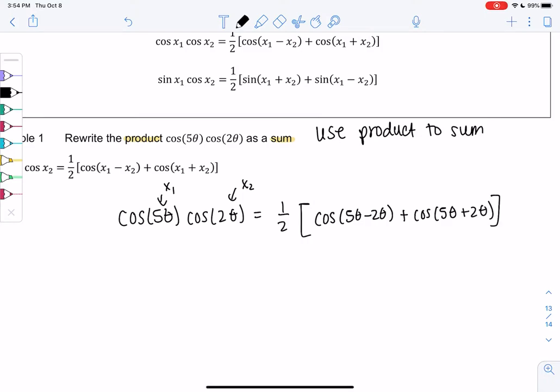Cosine of 5θ minus 2θ plus cosine of 5θ plus 2θ. Just plug it into the formula. So we get one-half. Then we'll get cosine of 3θ plus cosine of 7θ. And we've rewritten it as a sum. I might get rid of parentheses and just distribute the one-half. But that's pretty much it.